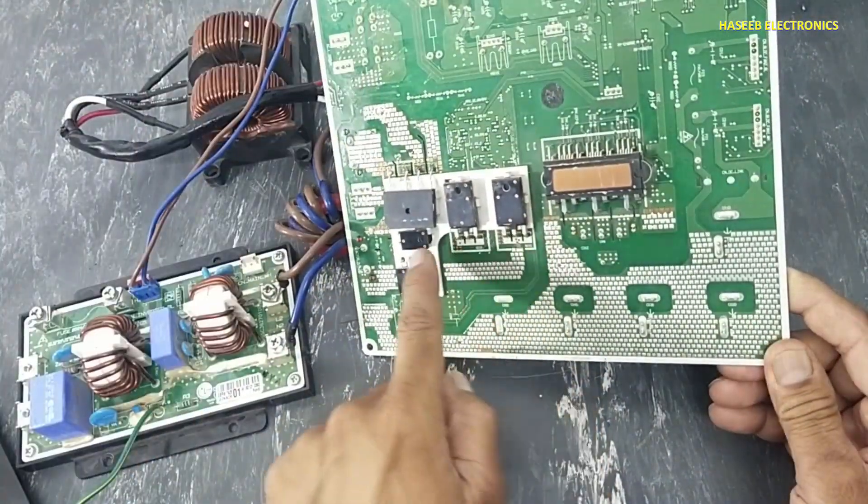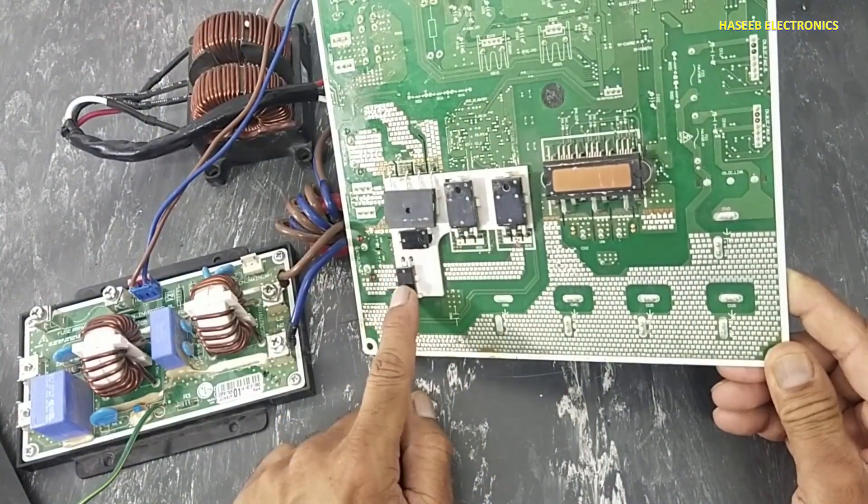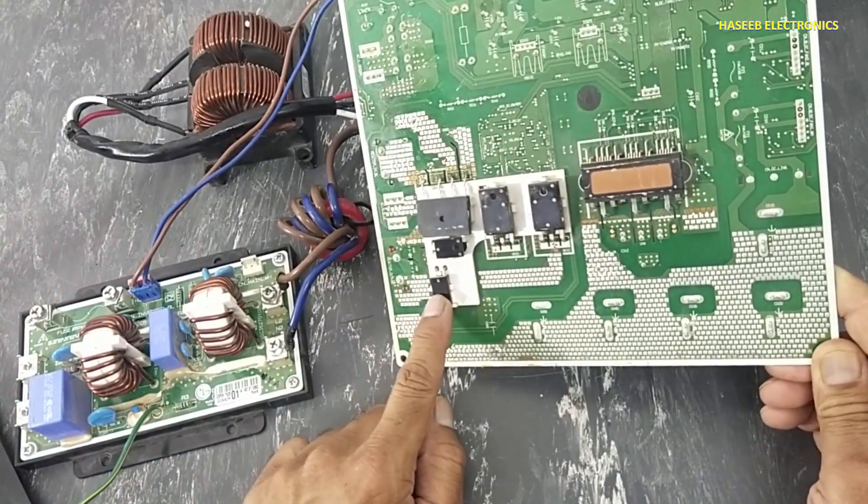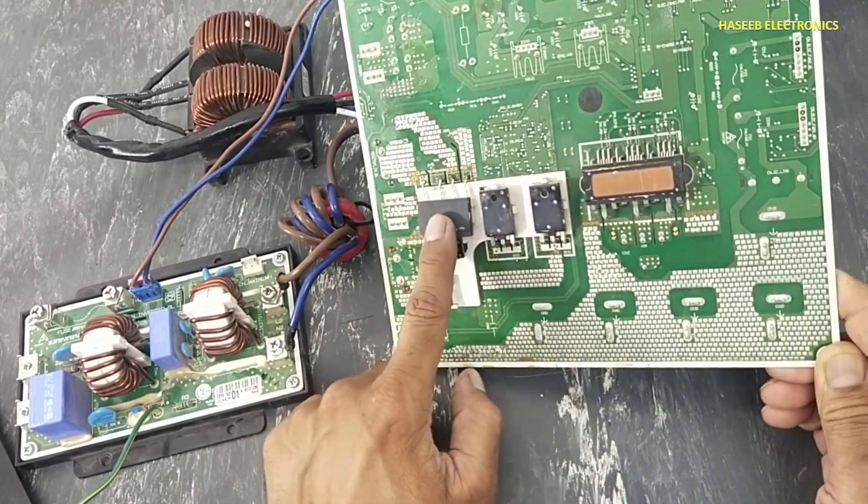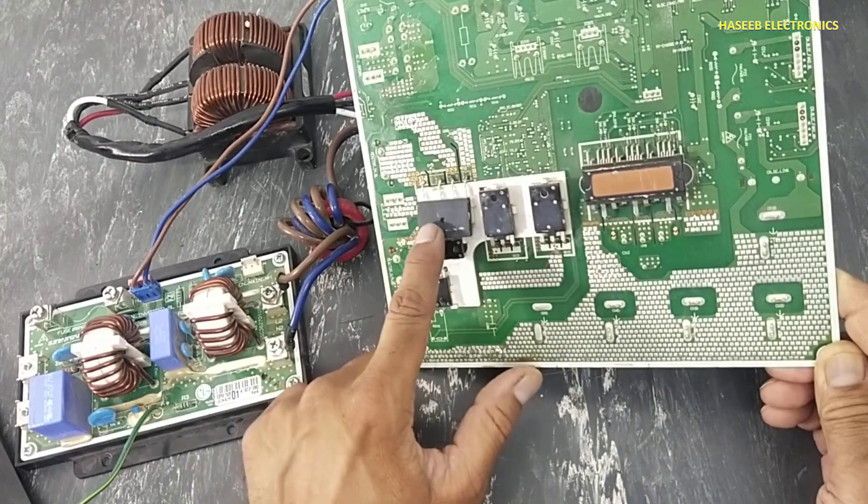And these IGBT rectifiers working as a PFC section, as a voltage booster to maintain voltage on DC line. Bridge rectifier rectifies the voltage.